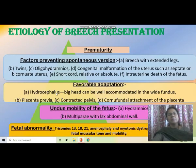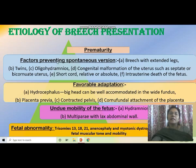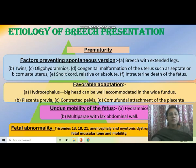The etiology of breech presentation includes: prematurity, factors preventing spontaneous version, favorable adaptation, undue mobility of the fetus, and fetal anomaly. Factors preventing spontaneous version include breech with extended legs, twins, oligohydramnios, congenital malformation of the uterus such as septate or bicornuate uterus, short cord, and intrauterine death of the fetus.